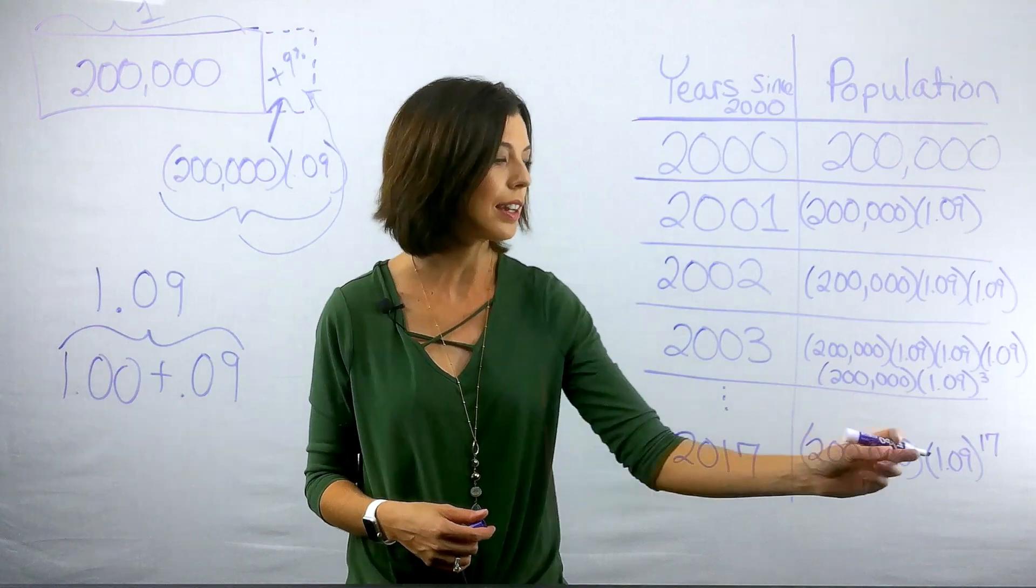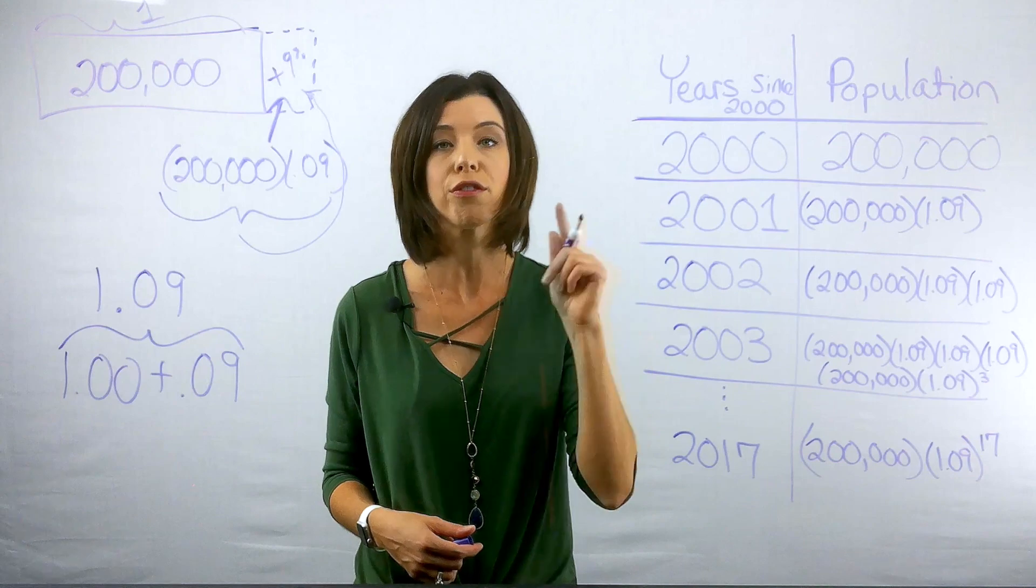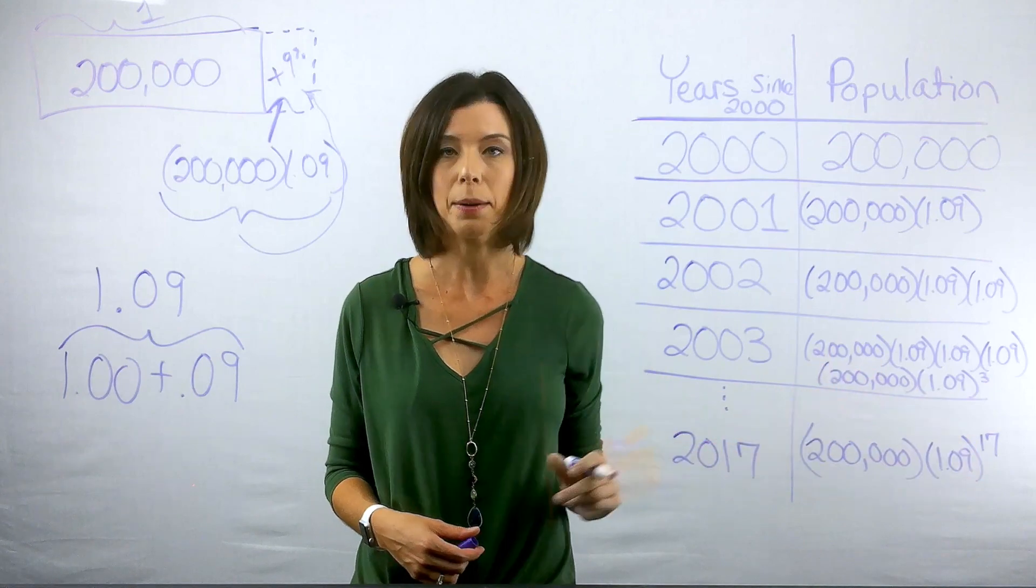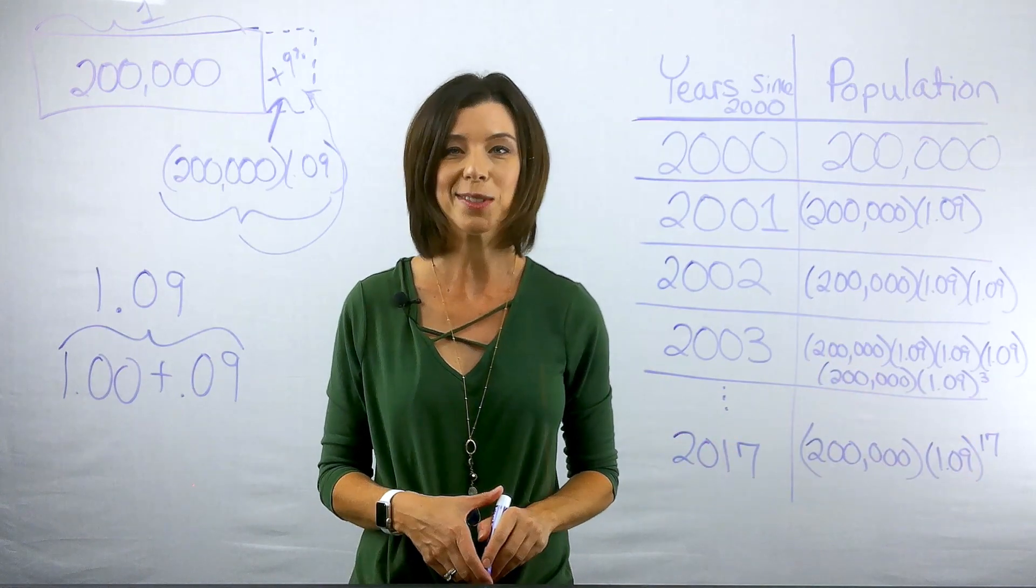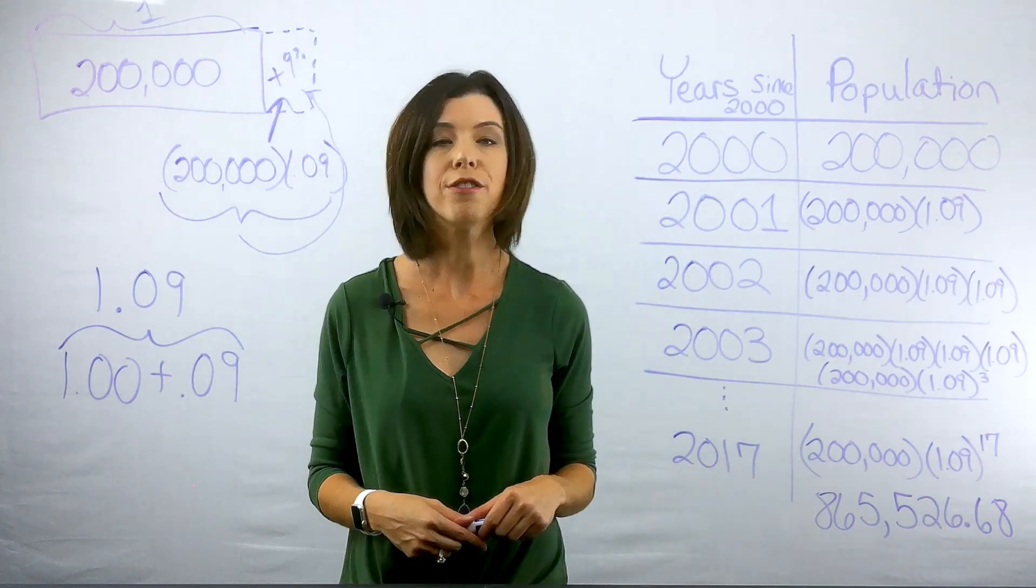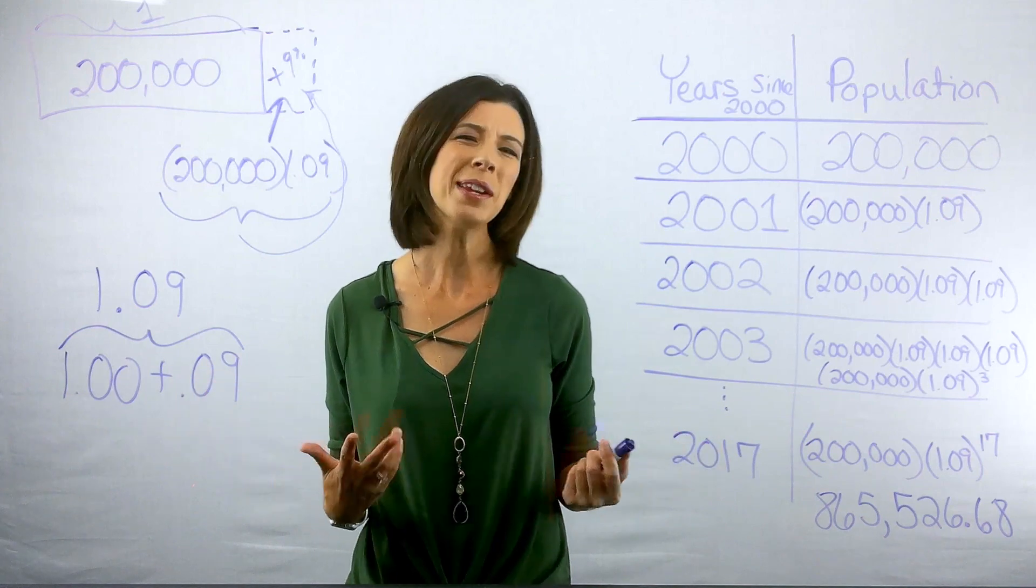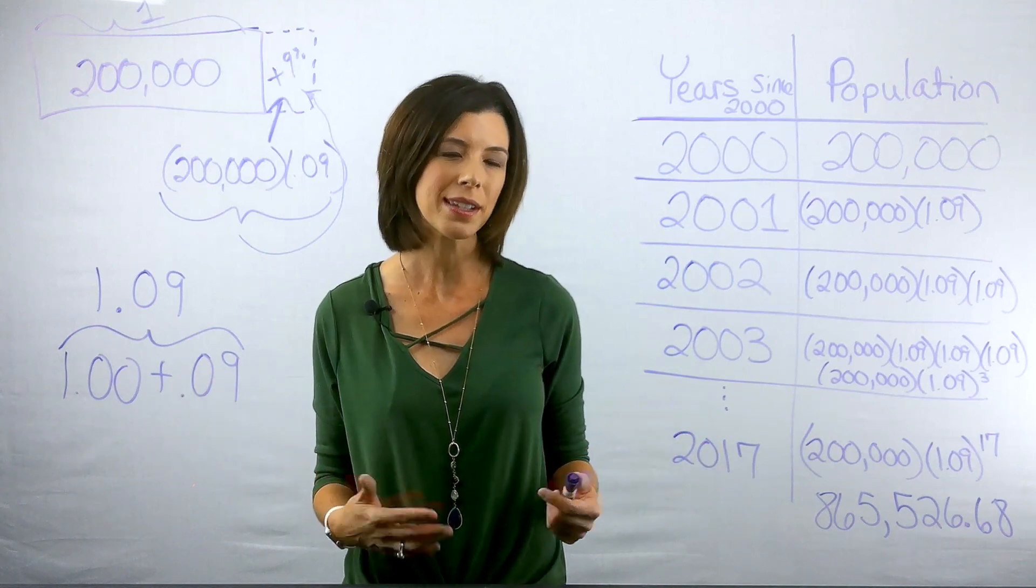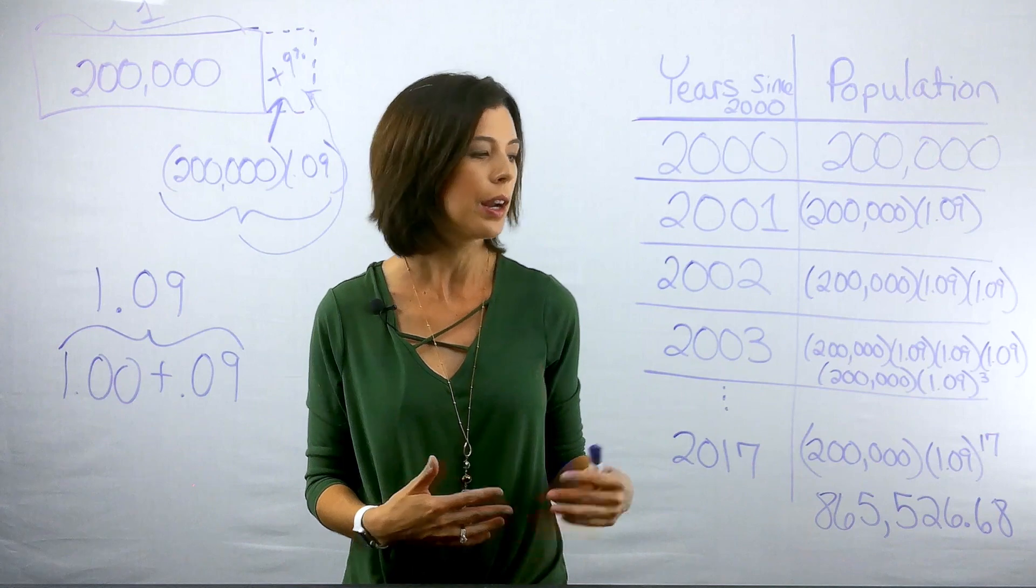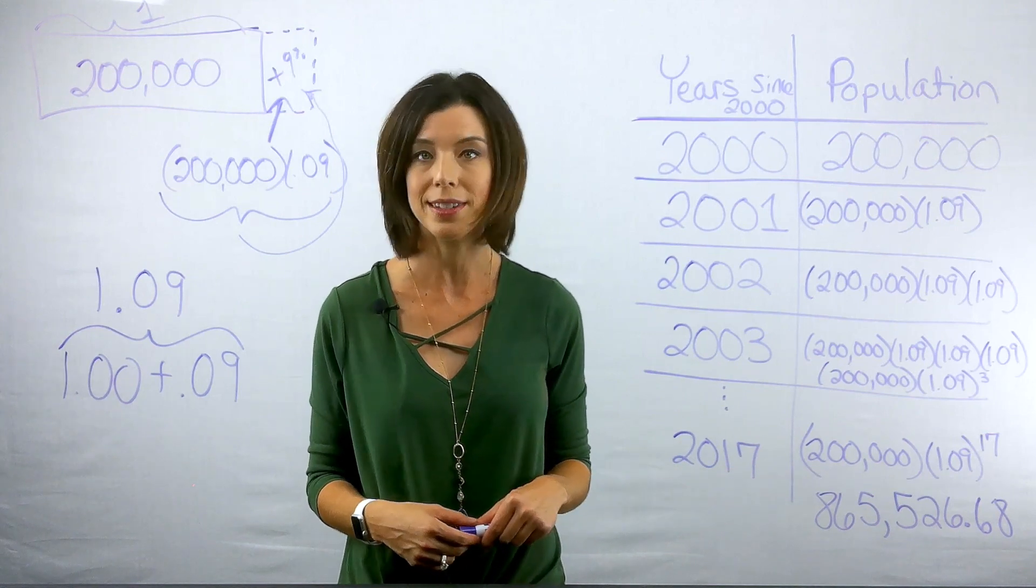Now I can go ahead and solve this out. So a little quick math. Again, remember your order of operations. 1.09 raised to the 17th power first, then multiply that number by 200,000. And here's what you get: 865,526.68 hundredths of a person. Now we know on population that doesn't totally make sense. We could round to the nearest whole number. But in this case, I'm just going to go ahead and leave it rounded to the nearest hundredth decimal place.